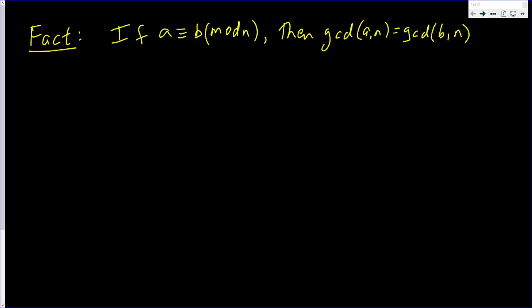In this video, we're going to prove the following fact. It says that if A is congruent to B mod N, then the GCD of A and N is the same as the GCD of B and N.